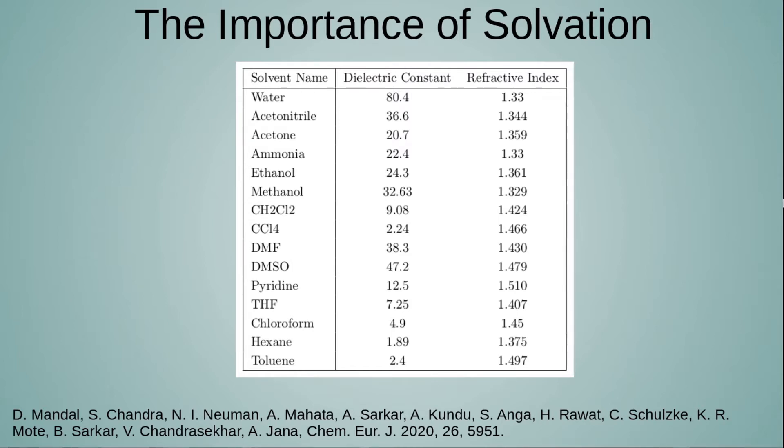There are other solvents like DMSO which has 47.2, DMF 38.3, methanol 32.63. These different solvents will stabilize different species, and that also happens in real life. For example, certain types of nucleophilic substitution reactions are performed in polar aprotic solvents such as DMF or DMSO or maybe acetonitrile or acetone, while other reactions require less polar solvents.